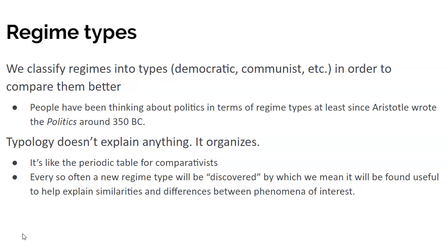It's worth noting that unlike the periodic table, regime types aren't natural kinds. We classify regimes because we find it useful to do so, not because there are natural types of regimes out there that we can discover through scientific investigation. Instead, what we're doing is looking at commonalities and trying to figure out what makes certain types of countries different from other types of countries. And once we see some patterns, we start classifying those regimes.